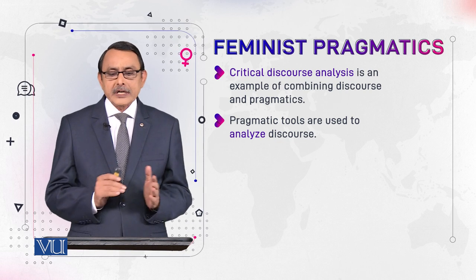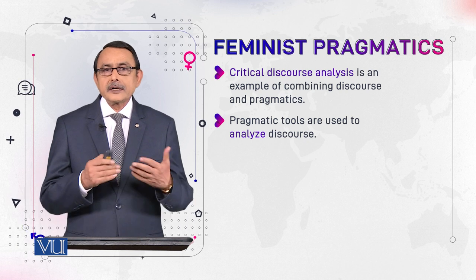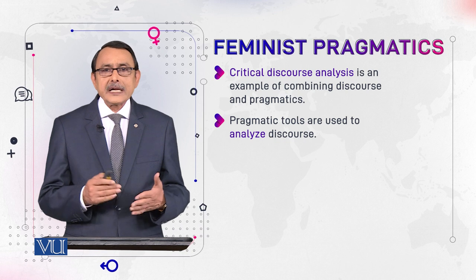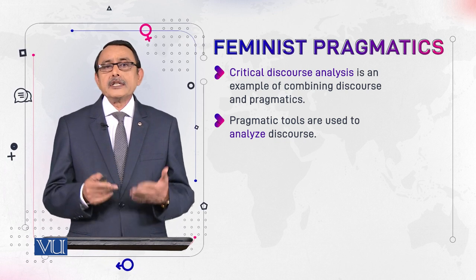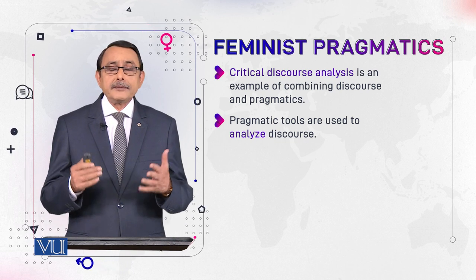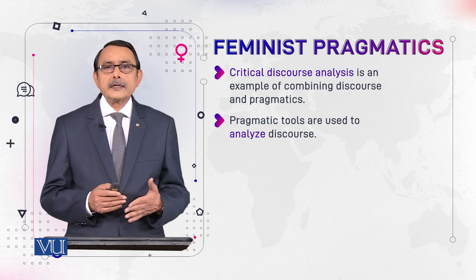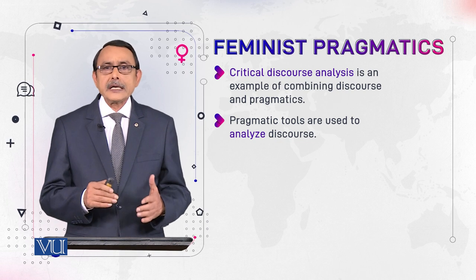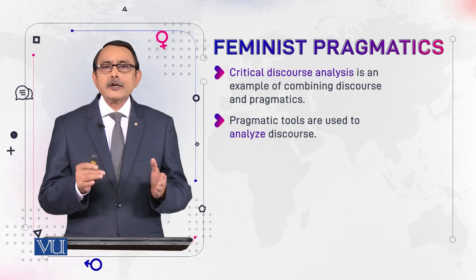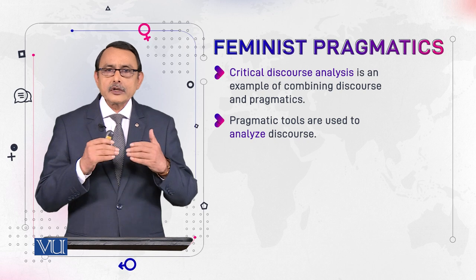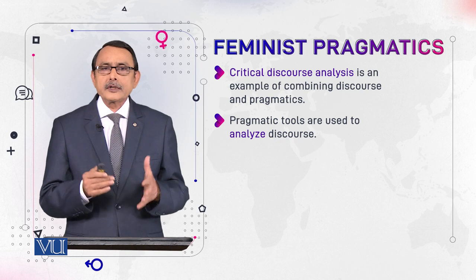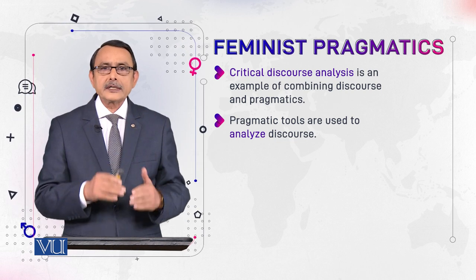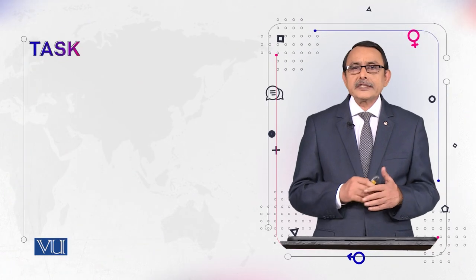Pragmatic tools are used to analyze discourse in critical discourse analysis. These tools include things already discussed in previous modules — for example, speech acts, politeness, face work, and implicature. All these notions from pragmatics help us to analyze discourse at the utterance level. When you understand utterances, you understand the stretch of utterances — the longer piece of text that consists of those utterances. The sum total of the meaning of utterances helps you understand the meaning of the entire discourse or text.